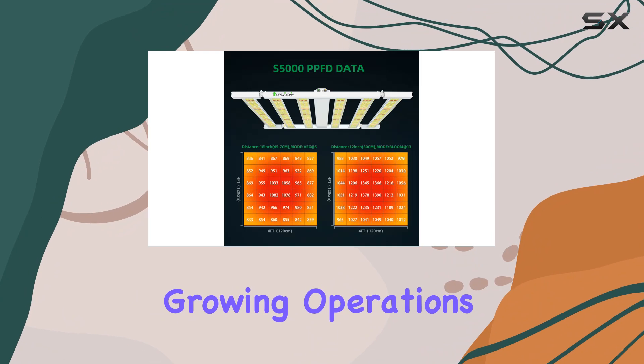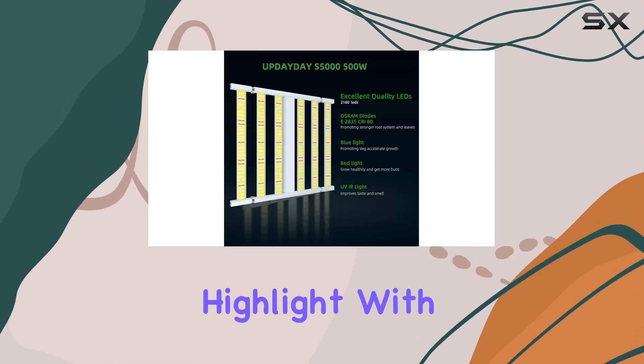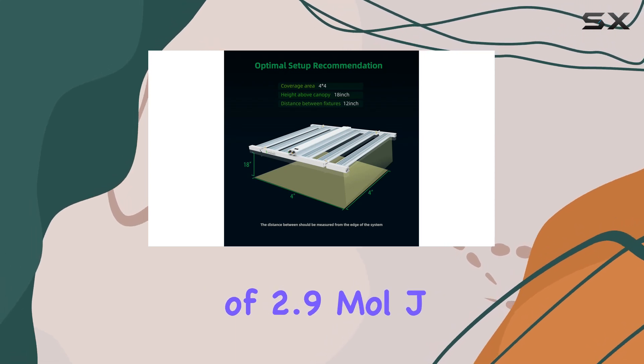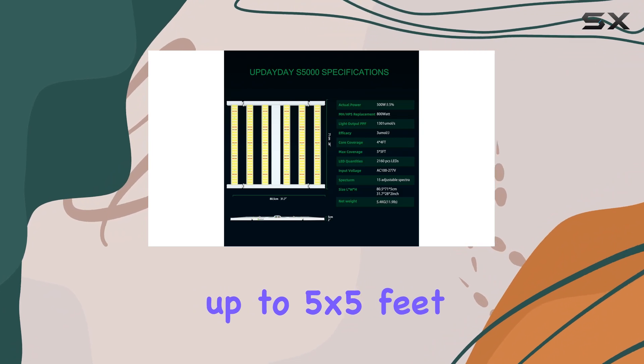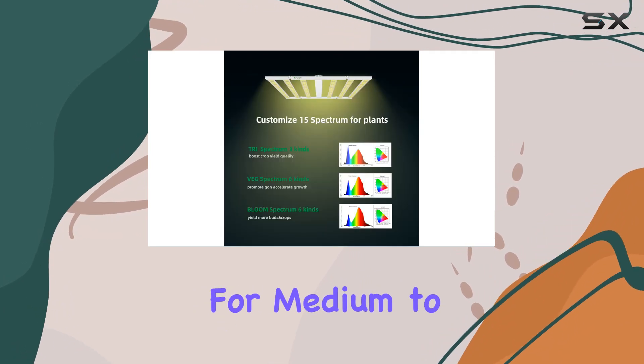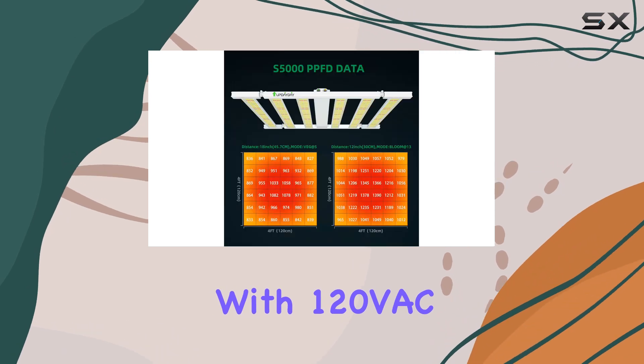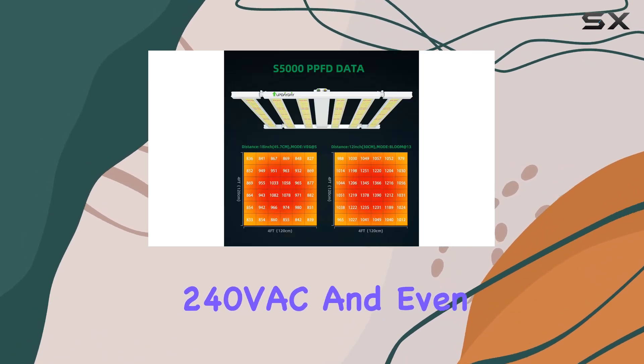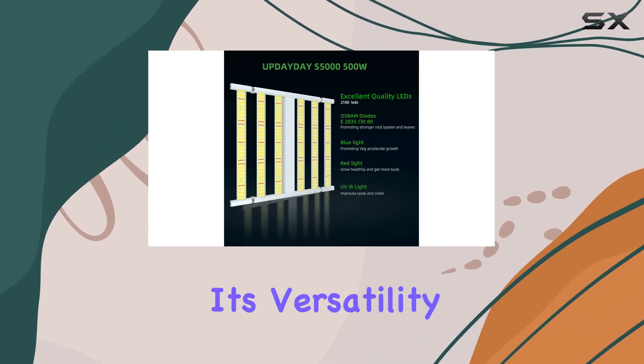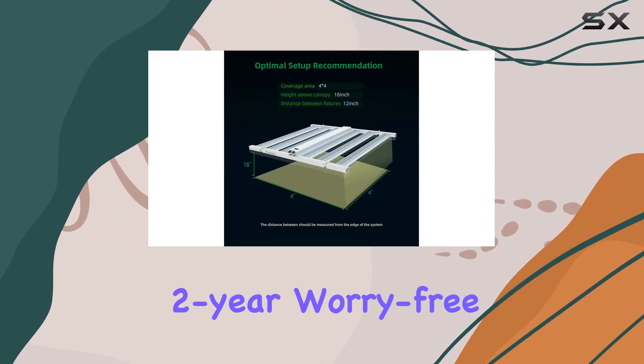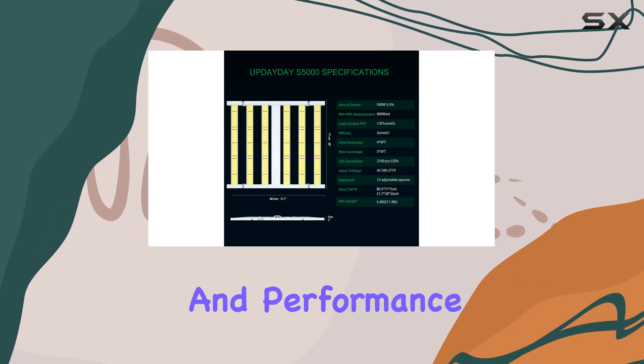The energy efficiency of this grow light is another highlight. With an impressive efficiency rate of 2.9 µmol/J, it consumes just 500 watts while covering up to 5x5 feet, making it a perfect fit for medium to large grow spaces. It's compatible with 120VAC, 240VAC, and even 277VAC systems, further increasing its versatility. Plus, with a two-year worry-free warranty, Updata stands behind the durability and performance of their product, offering peace of mind for long-term use.